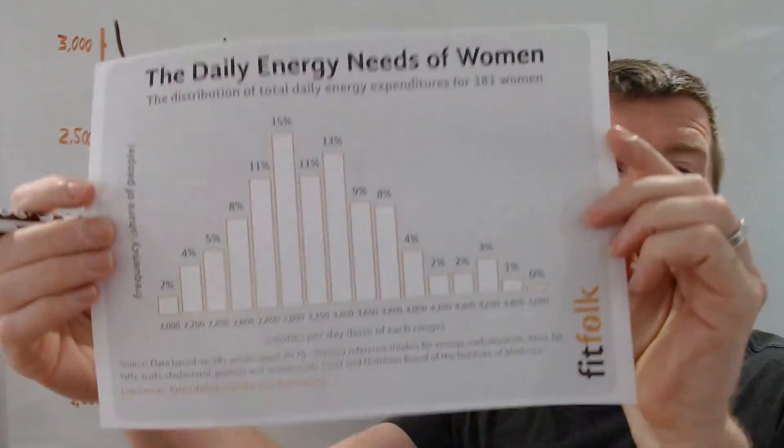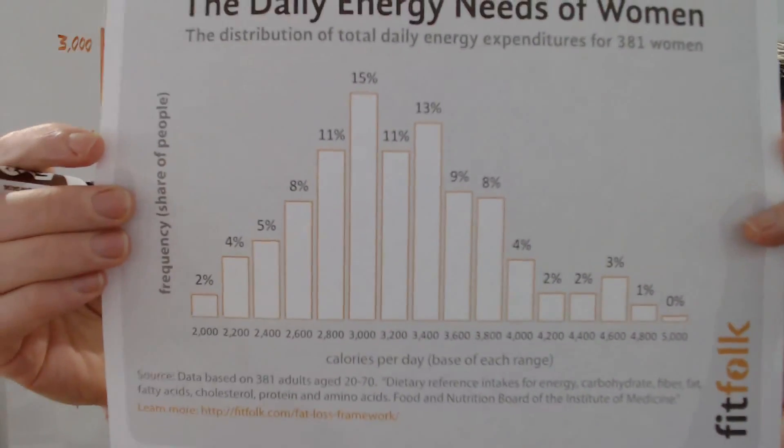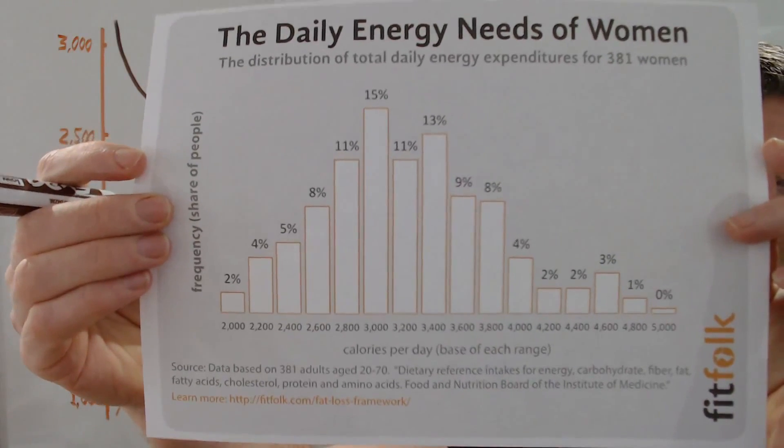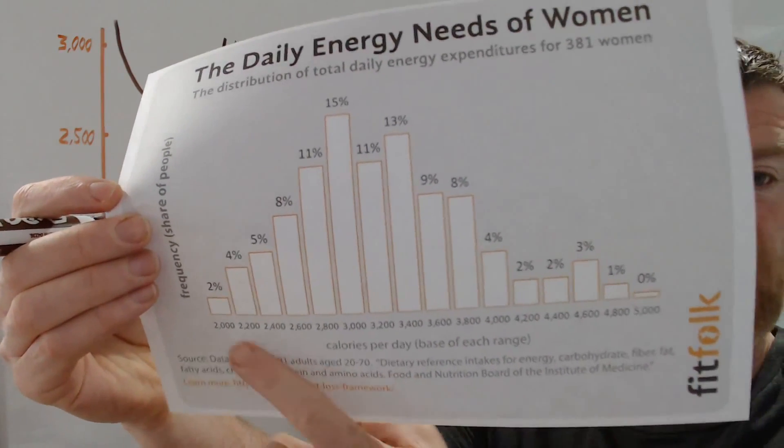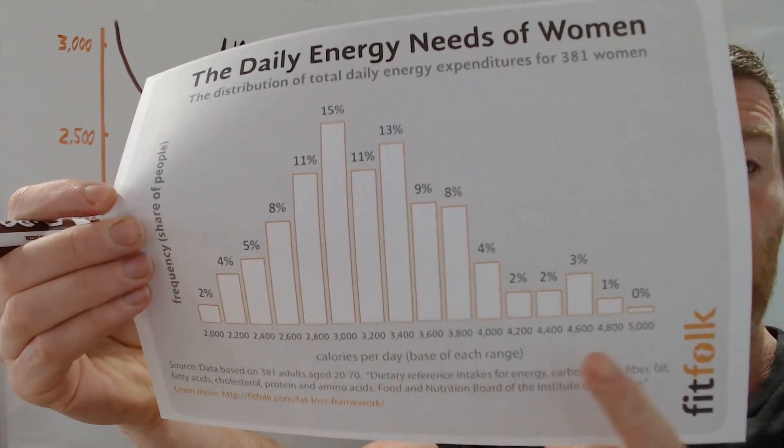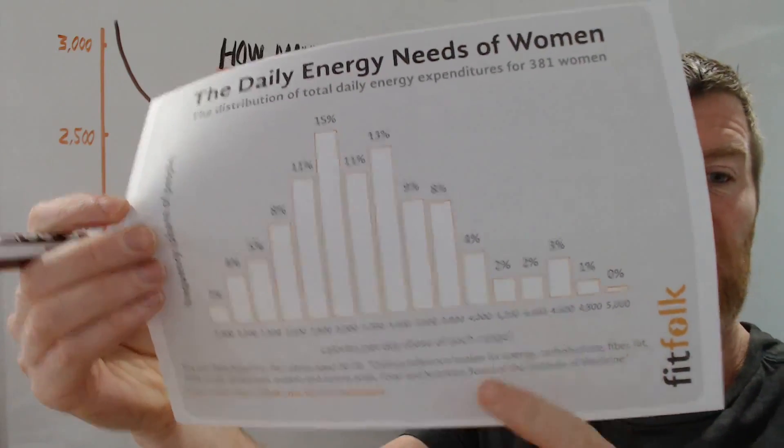I'll show you the graph here. This is the distribution. So you can see that actually women's energy needs are all over the shop. Some poor women have very low energy needs down here, well below 2,000. But some of them have massive energy needs, up over 4,000. So those huge energy needs are amazing.